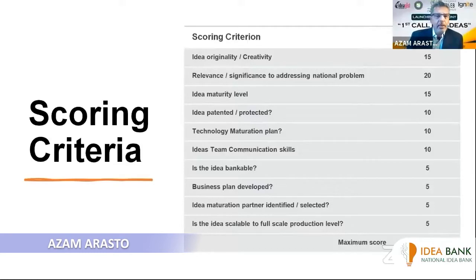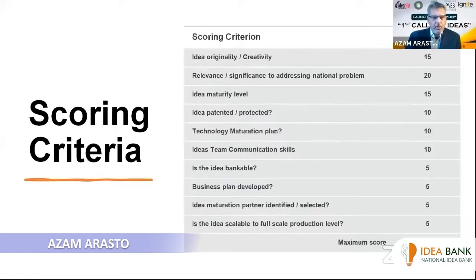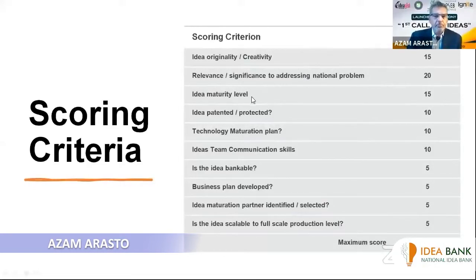In order to do that, what we have done is to make sure we have a proper and equitable scoring criteria by which we can score all the ideas in a proper manner. Here is a list of items that we will be looking for: idea maturity, creativity, relevance to addressing national problems, maturity level, and things like that. On the right-hand side is the maximum scoring or weighting factor assigned to each one of these criteria.